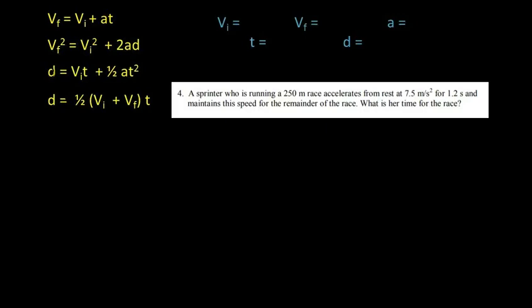It states: a sprinter who is running a 250-meter race accelerates from rest at 7.5 meters per second squared for 1.2 seconds. So just in that sentence, there's a lot going on. And maintains this speed for the remainder of the race.